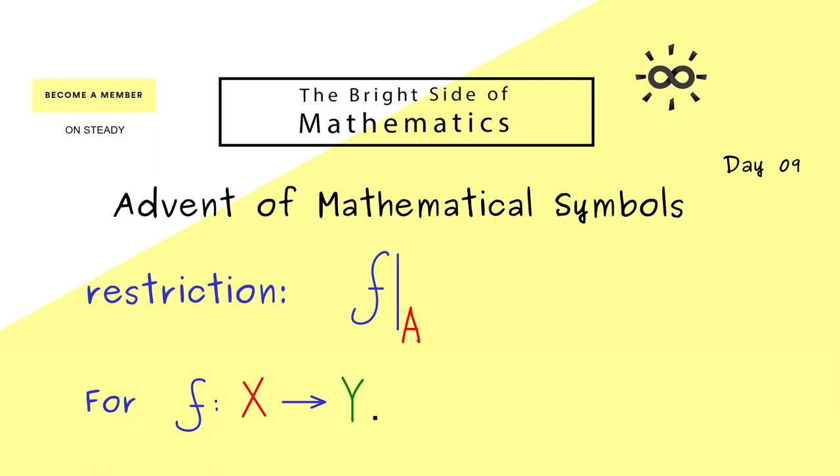However now we want to change the domain so we look at a subset a of x. This means now that this f restricted to a should be a map that is only defined on the set a. So the domain is a but we still map into y.